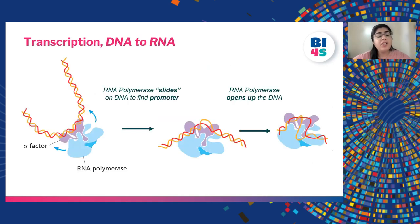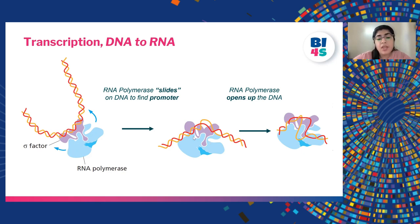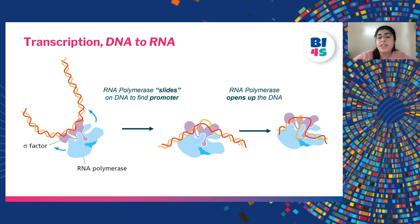RNA polymerase is the protein that actually synthesizes RNA, but it needs the help of a factor known as sigma factor. First, RNA polymerase and sigma factor bind to the DNA and keep sliding along it. Since the start of transcription is marked by the promoter sequence, RNA polymerase keeps sliding until it finds that sequence, and on finding the promoter it stops and starts opening the DNA.